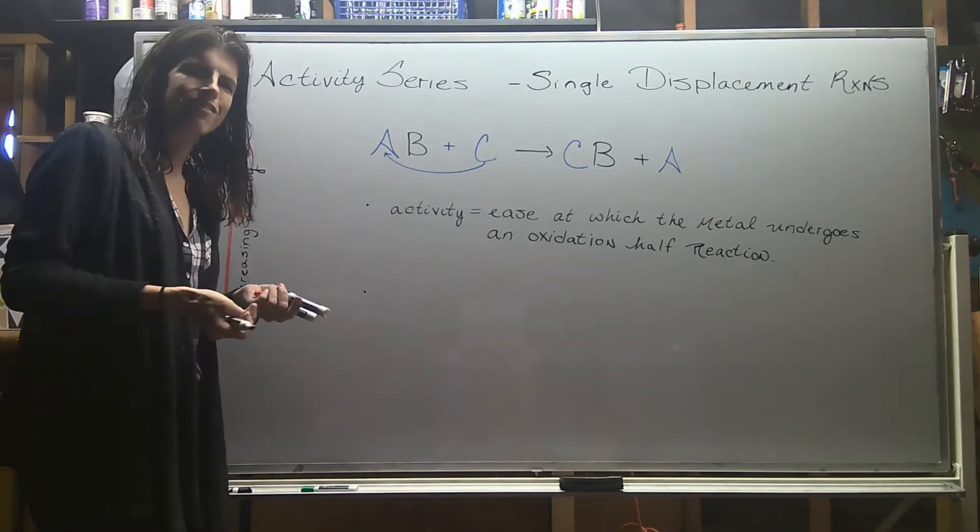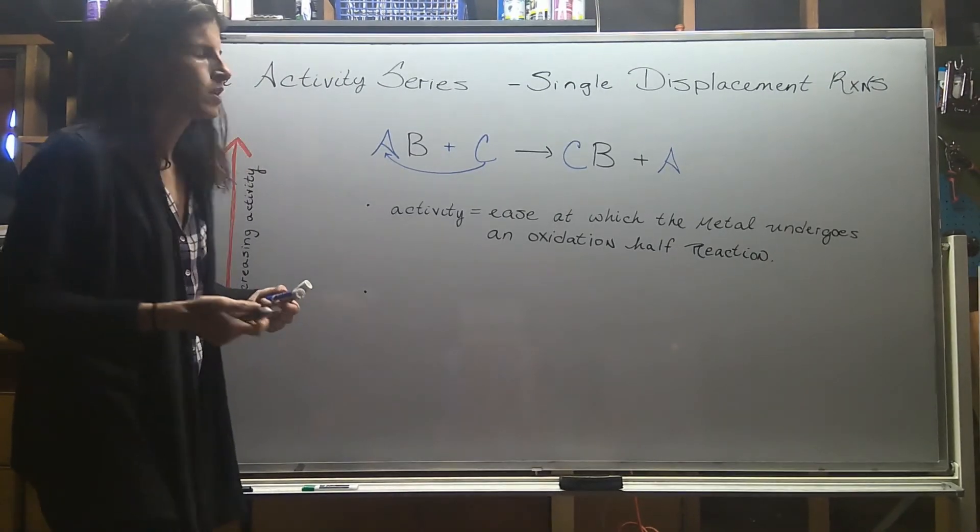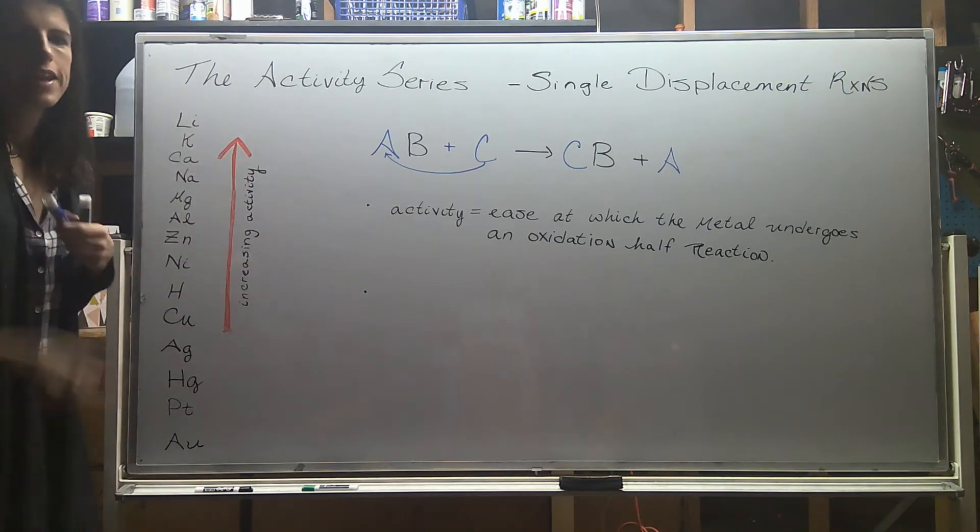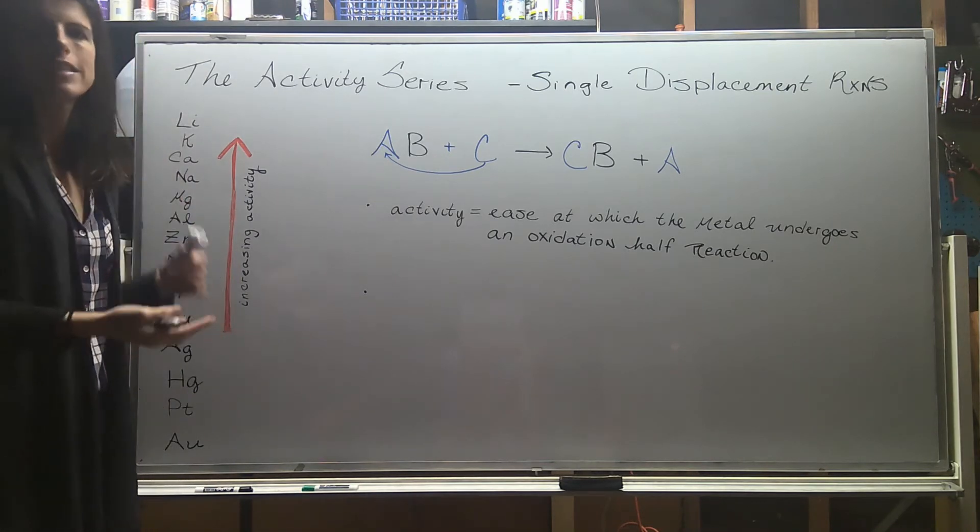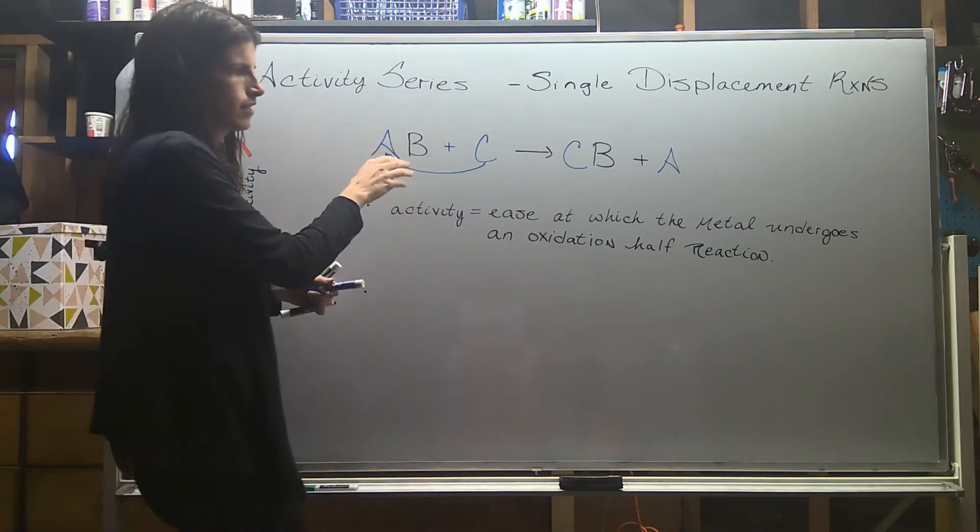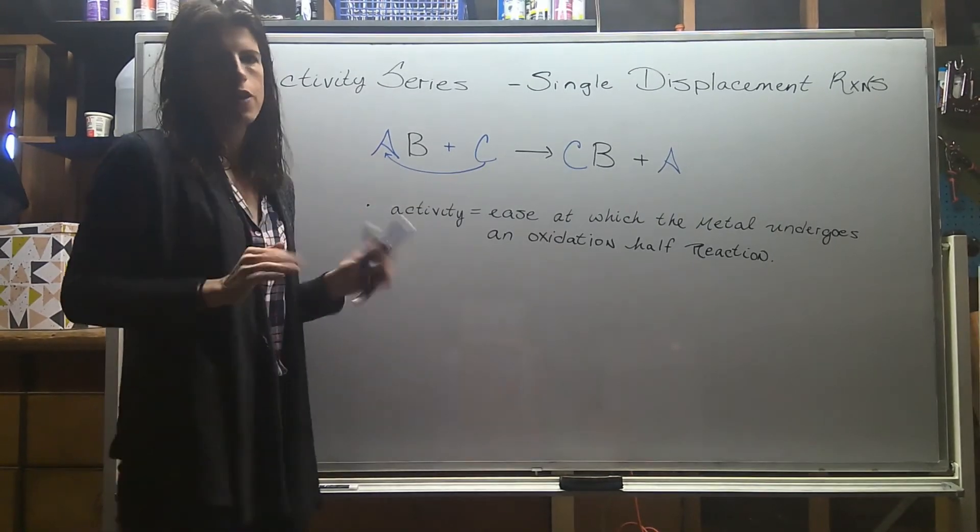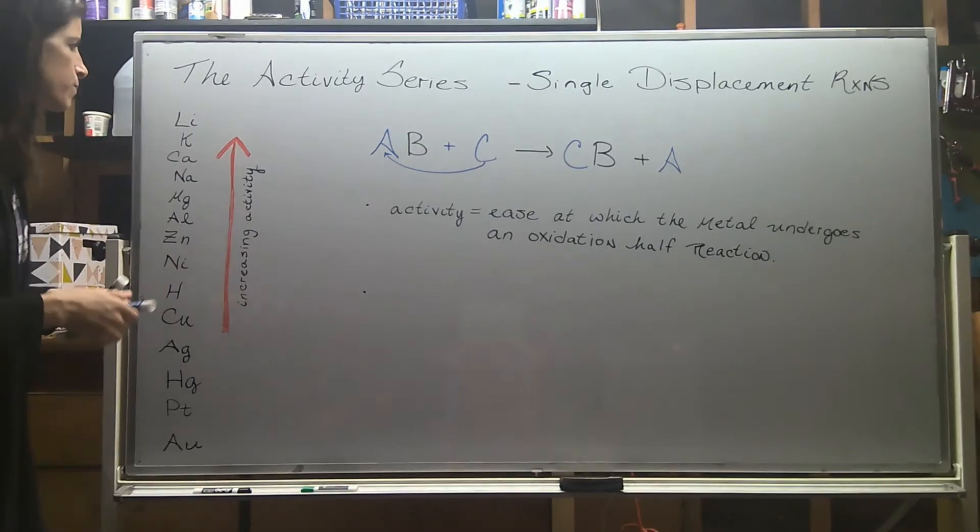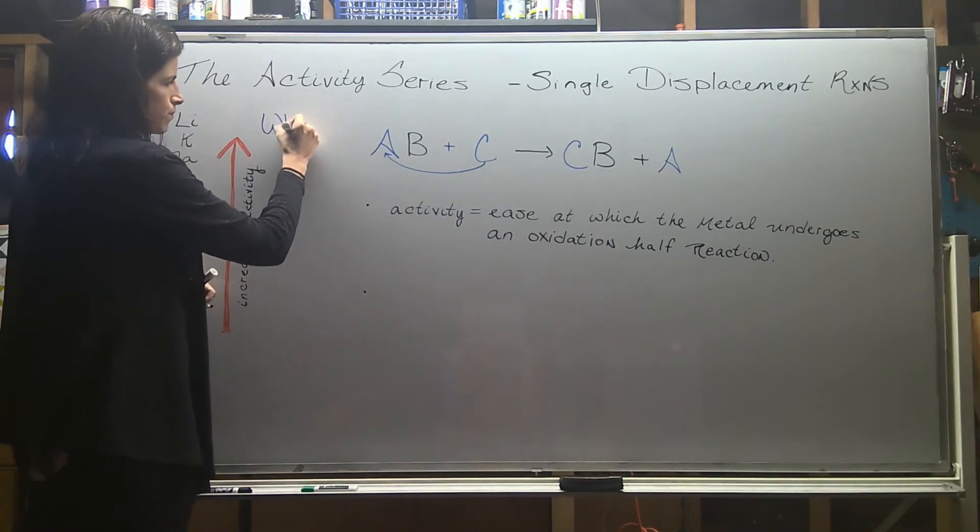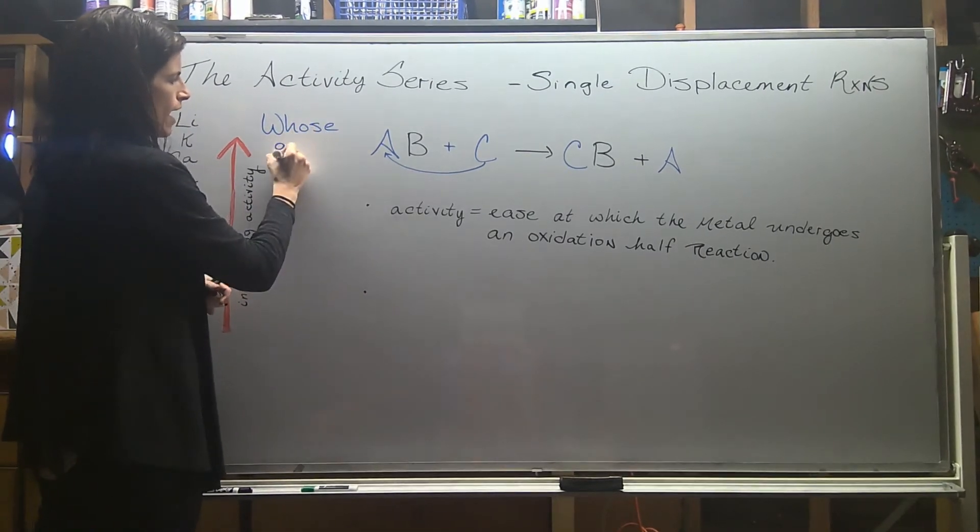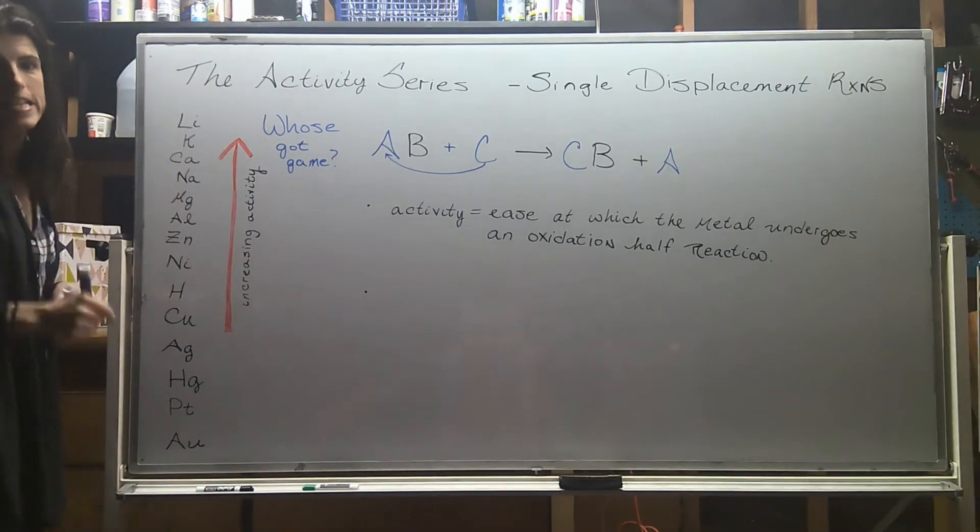However, does C have enough power, enough activity to kick out A? That's the big question. So when we go over to the activity series, and again, I know I've talked about it a little bit, everything in my head is like some kind of novella, some kind of grand soap opera. So to me, C is like the sancho, who's trying to kick A out and hook up with B. It's very dramatic, very scandalous. So I like to think of this as a table of who's got game.